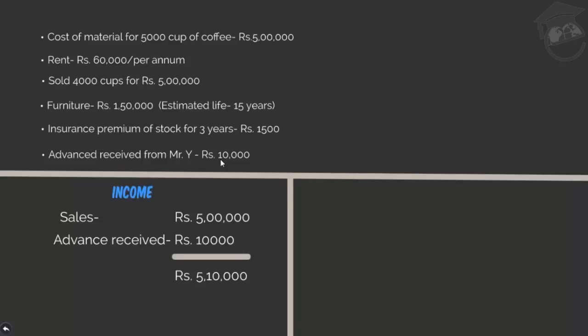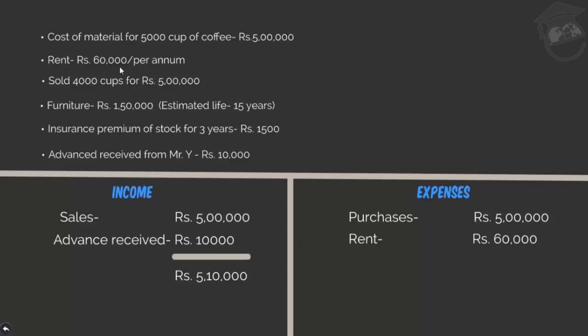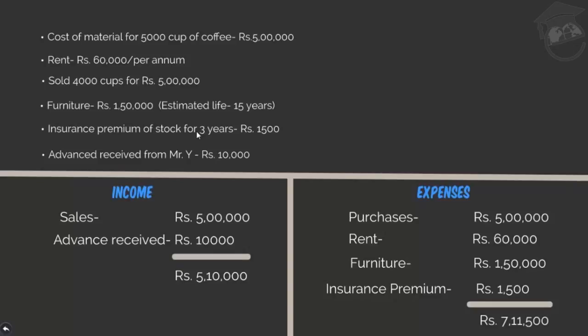Now I list down all the expenses: purchases Rs. 5 lakh; rent Rs. 60,000; furniture Rs. 1 lakh 50,000; insurance premium Rs. 1,500. My expenses sum up to Rs. 7,11,500. I can see just by looking that my expenses exceed my income. The amount of loss comes to Rs. 2 lakh 1,500.